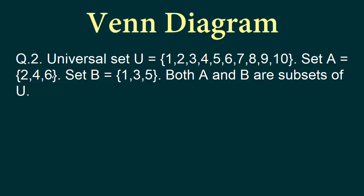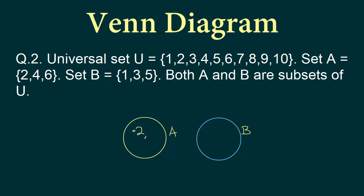Set A has the even numbers 2, 4, 6 and set B has the odd numbers 1, 3, 5. So they don't have anything in common. We draw set A and set B as separate, non-overlapping circles. Let's say this is set A and this is B. The elements of A are 2, 4, and 6. For B we have 1, 3, and 5. So we have written the elements for A and B.